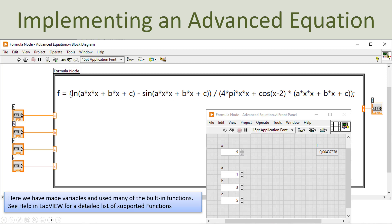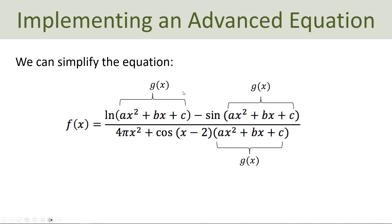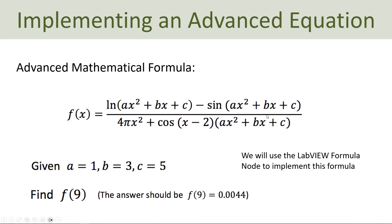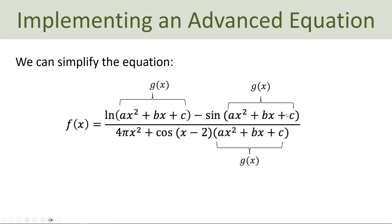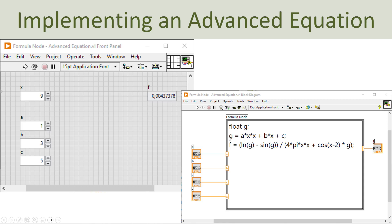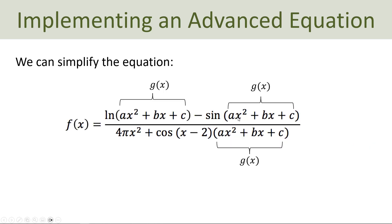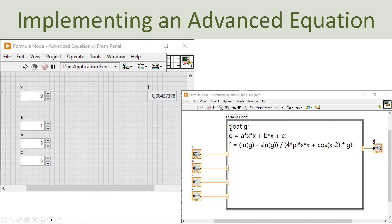We have implemented a quite advanced formula using this formula node. It's easy to make spelling mistakes, miss a parenthesis, or miss a semicolon. So typically you want to simplify the equation. This is the original equation and you can see this expression appears again and again. So we can just define this as a sub-function. We implement a function g of x, define a float variable g with a semicolon, and then use g in the main formula. By splitting up the function like this, it's easier to write without any errors.